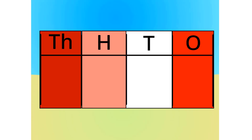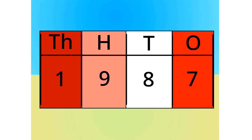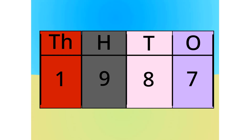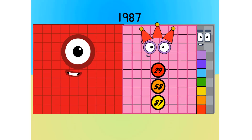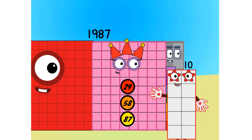First off, the number table. Let's do one thousand, nine hundred and eighty-seven for example. Do you see anything that relates to this number? Let's split it into its units. This number is made up of one thousand, nine hundreds, eight tens, and seven ones. Let's see this in block form. As you can see, this number is one thousand, nine hundreds, eight tens, and seven ones.